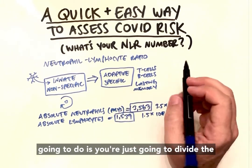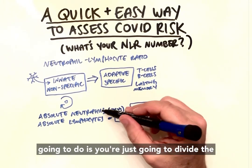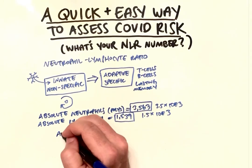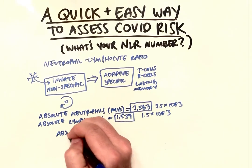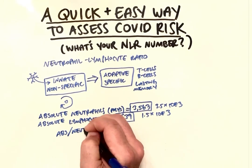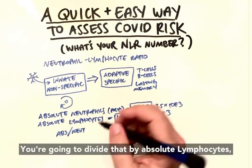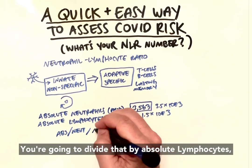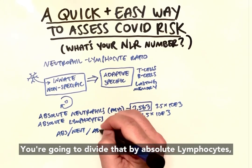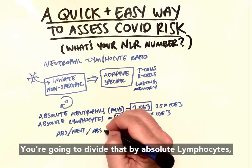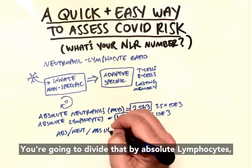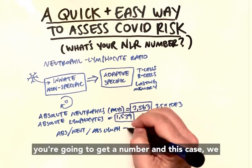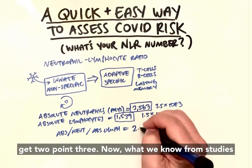What you're going to do is divide the absolute neutrophils by the absolute lymphocytes. In this example, that gives us 2.3.